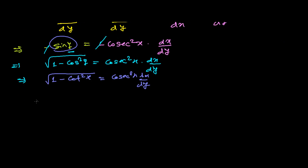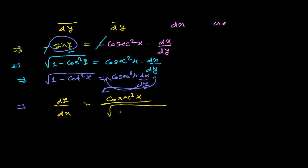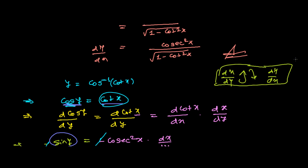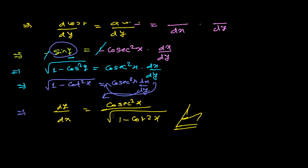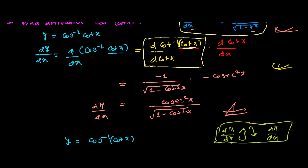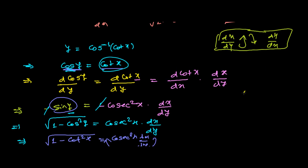Now just take the reciprocal: dy/dx equals cosec²x divided by the square root of 1 minus cot²x. So see — in any way you solve, we get the same answer. Cosec²x divided by the square root of 1 minus cot²x. Whatever method you feel easier — if you know the formula, use the formula, it will be a little bit faster. If you forget the formula, then proceed with this second method.